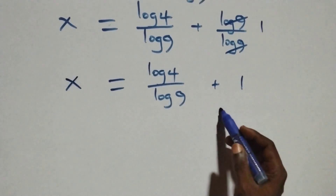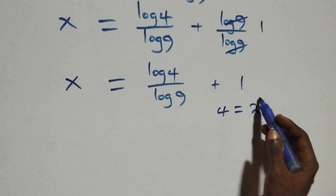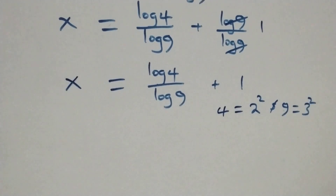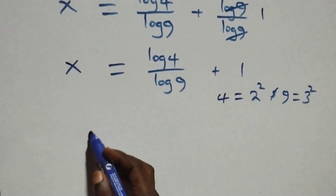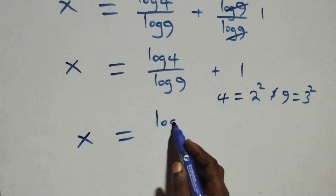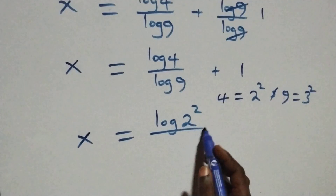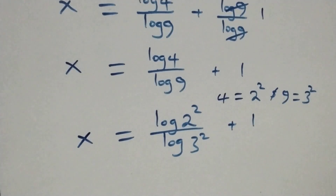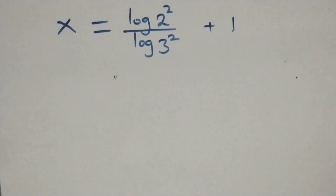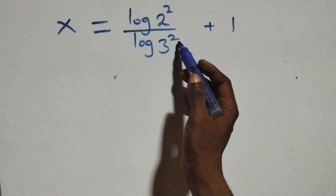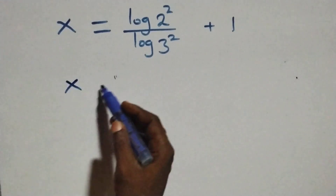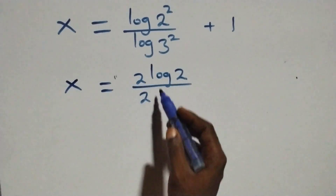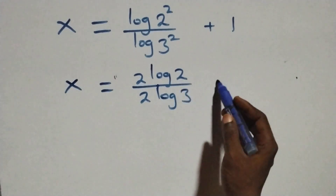From here, 4 can be expressed as 2 times 2, which is 2 squared. And also 9 as 3 times 3, which is 3 squared. So what we have becomes x equals log 2 squared over log 3 squared plus 1. Applying the power law of logarithms, 2 comes down in the numerator and 2 comes down in the denominator, giving x equals 2 log 2 over 2 log 3 plus 1.